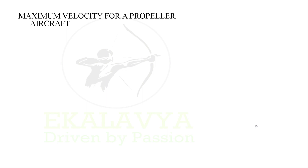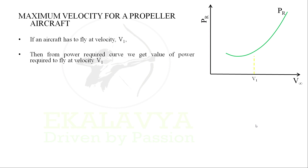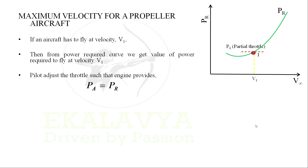Now, in order to find maximum velocity for a propeller aircraft, let's consider the power required curve. If an aircraft has to fly at velocity V1, then from the power required curve we can get the value of power required to fly at V1. The pilot then adjusts the throttle such that the engine provides power available equal to power required.